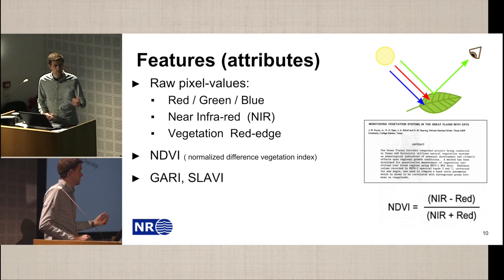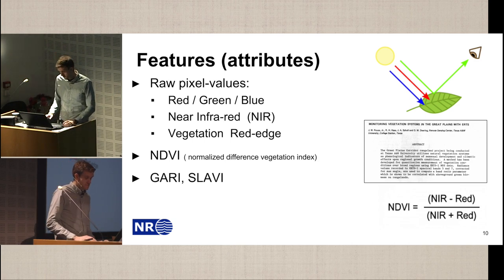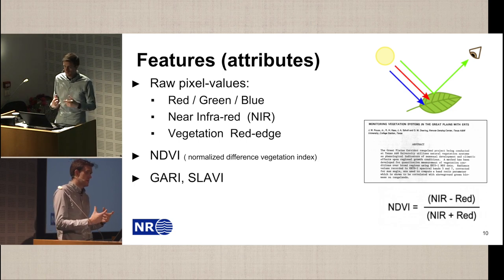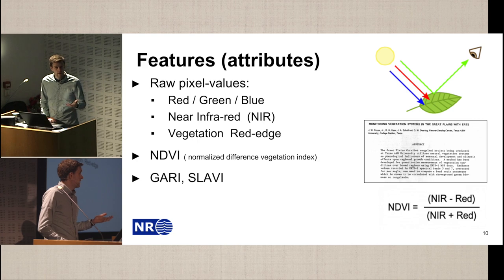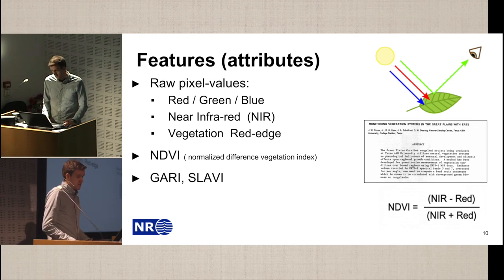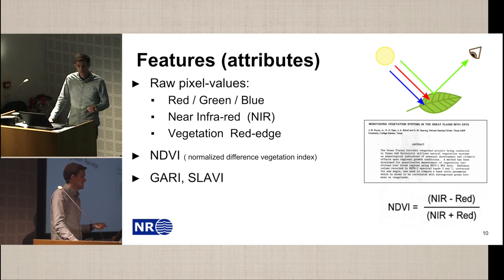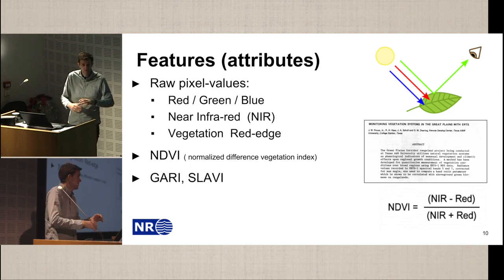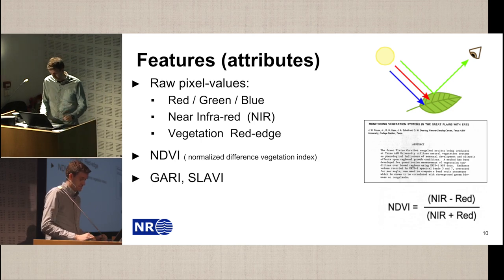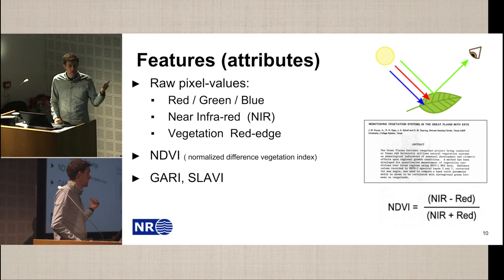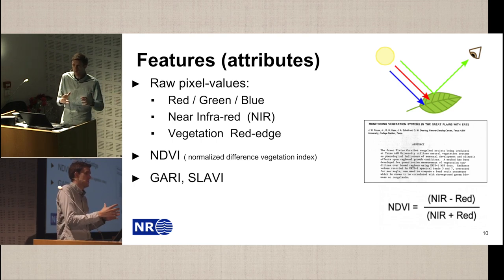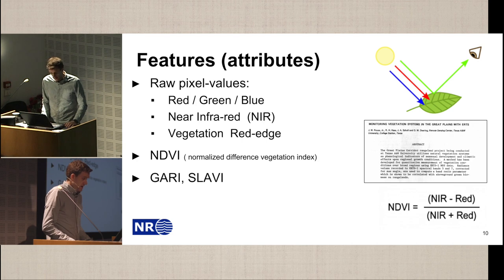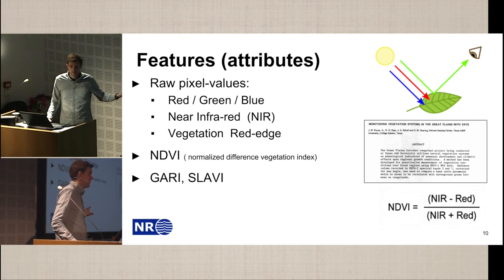In addition, we can use physics at this step. The chlorophyll in the leaves of trees reflects more green light than other wavelengths. There is a well-known index called the normalized difference vegetation index (NDVI), which is a ratio between the green light and the red light. There are other features like this we can compute. In the feature step, we compute relevant features and can put in prior knowledge about the problem.